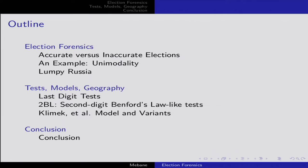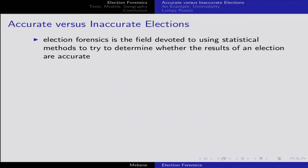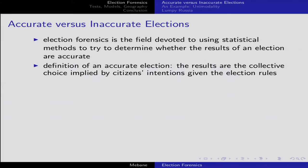That's the Klimek model and its variants. Election forensics is a term I made up for a paper, but I also wanted to create not only a paper and a book, but a field. Now there are a lot of people who work on parts of this. Specifically, the field devoted to using statistical methods to try to determine whether election results are accurate is the best definition of what I'm about. The definition of an accurate election is one where the outcome — the collective choice — is the one implied by the intentions of voters given the election rules.